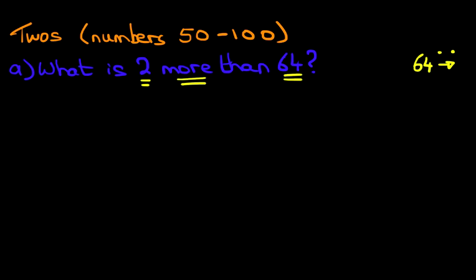So counting forwards from 64, the next number is 65, and the last one is 66. And that is our answer — it is 66. Let's give it a nice tick. So it's as simple as that.